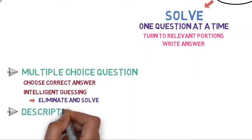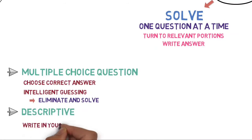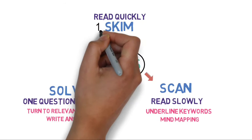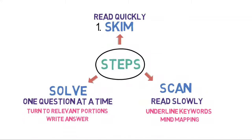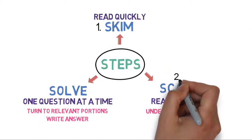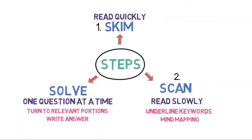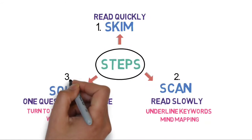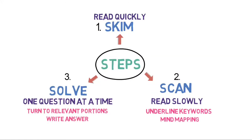For descriptive-based questions, write the answers in your own words, neatly and precisely. Once again, to recap the steps: Step 1, Skim — read the passage fairly quickly to get a general idea. Step 2, Scan — read again, this time in a slow manner to know the details. Step 3, Solve — take one question at a time, study the question thoroughly, turn to the relevant portion of the passage, read it again, and write the answer.